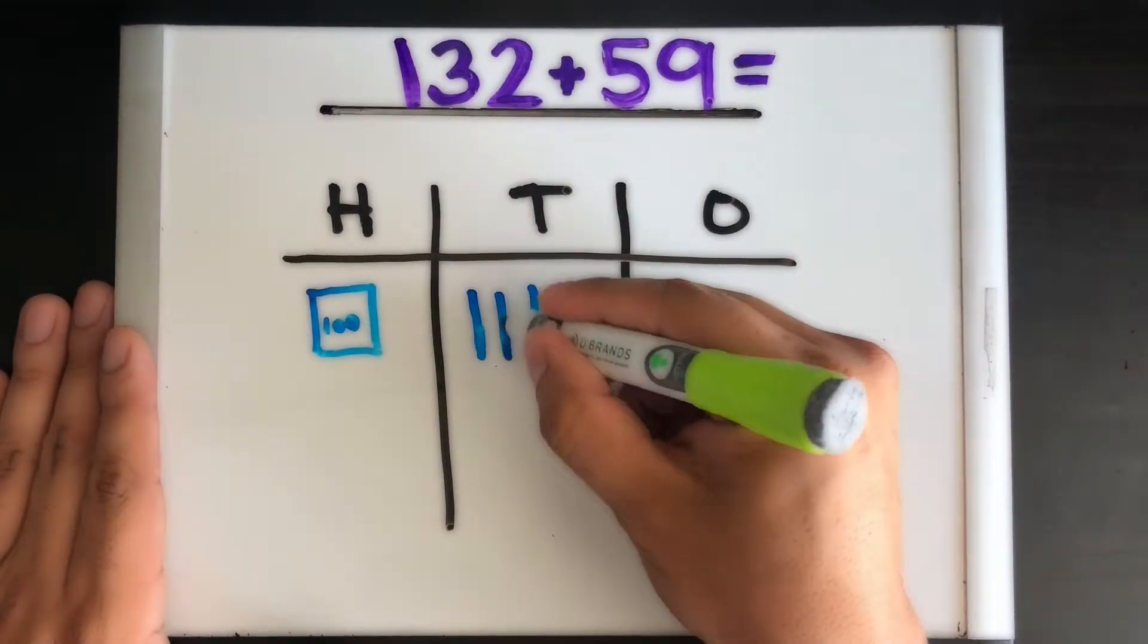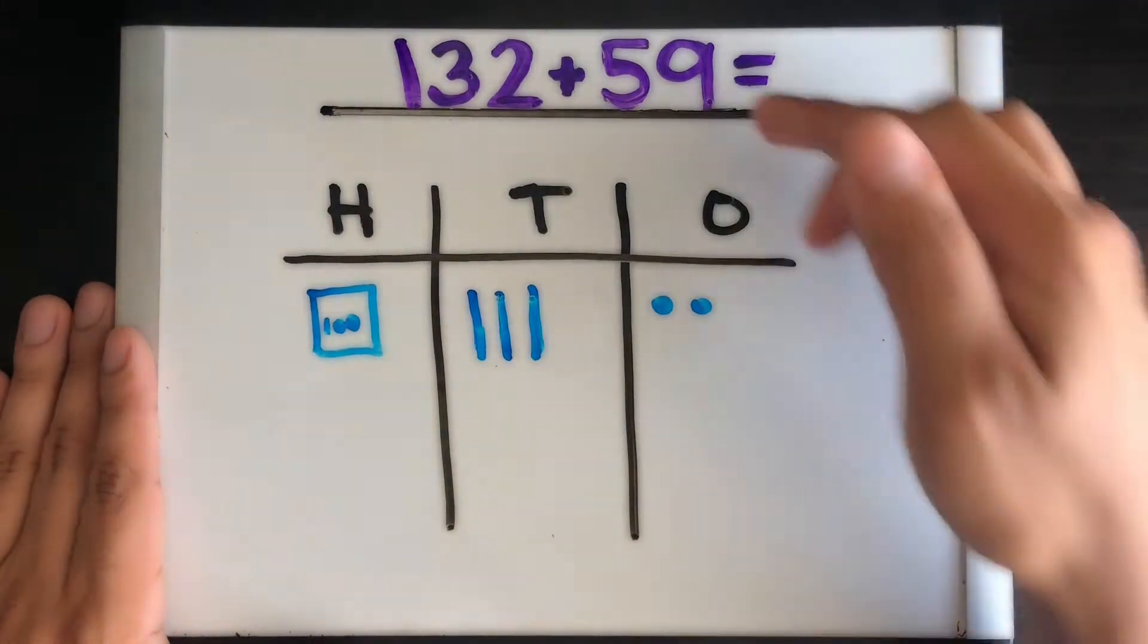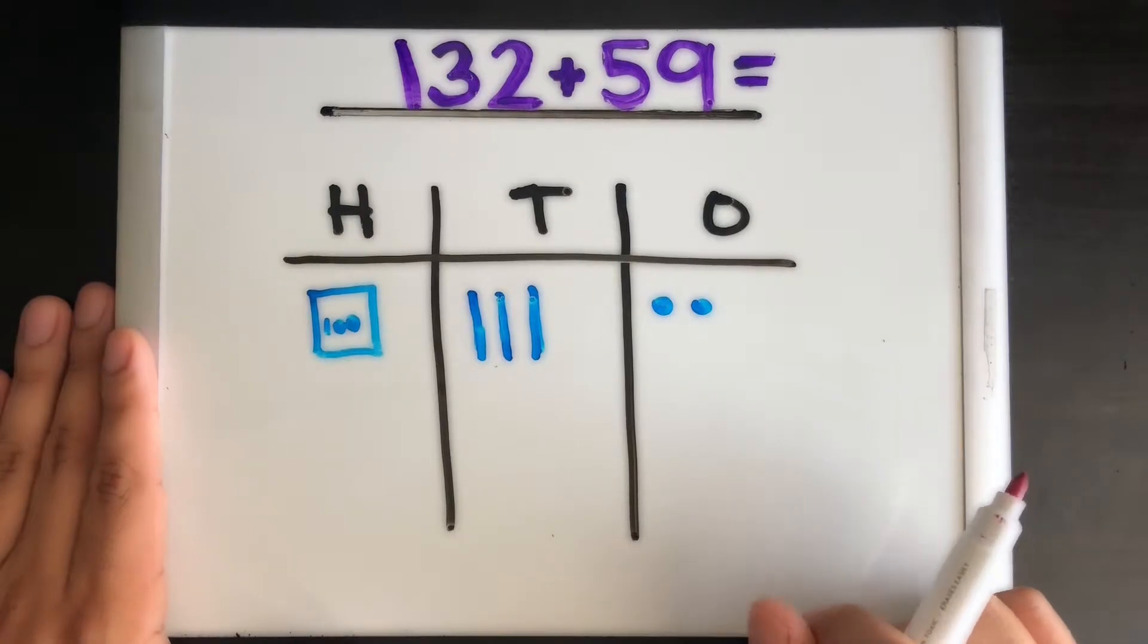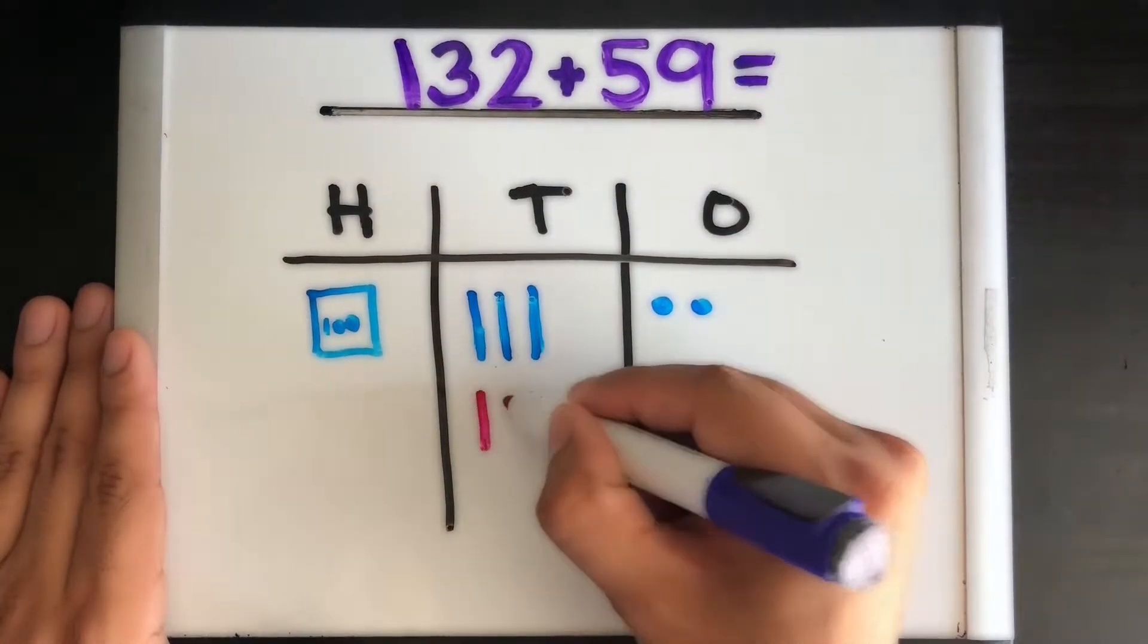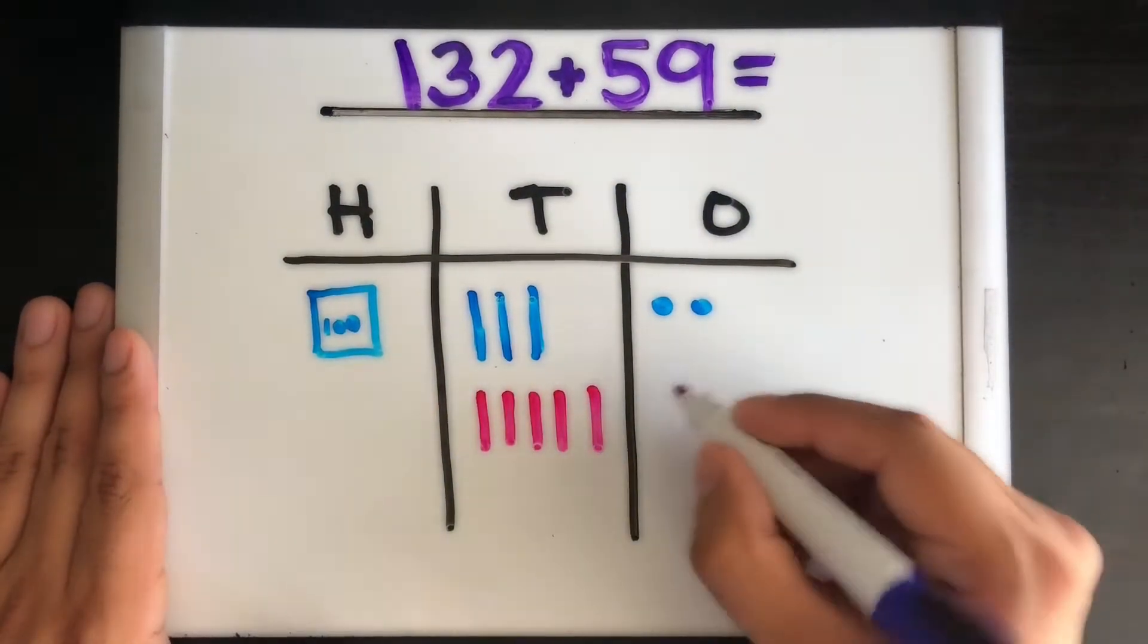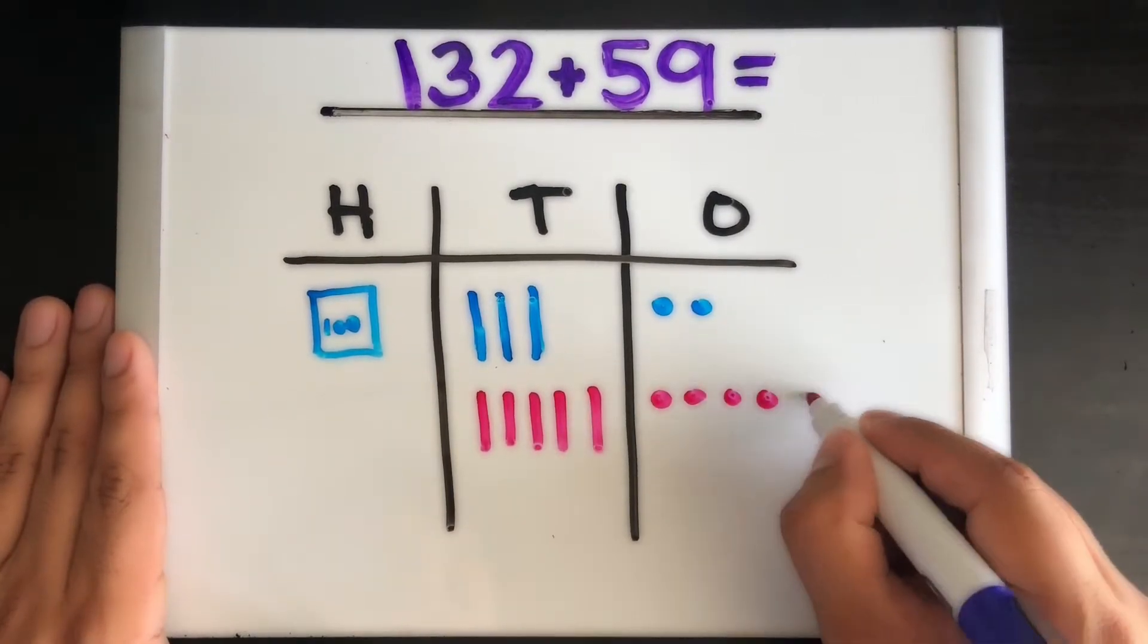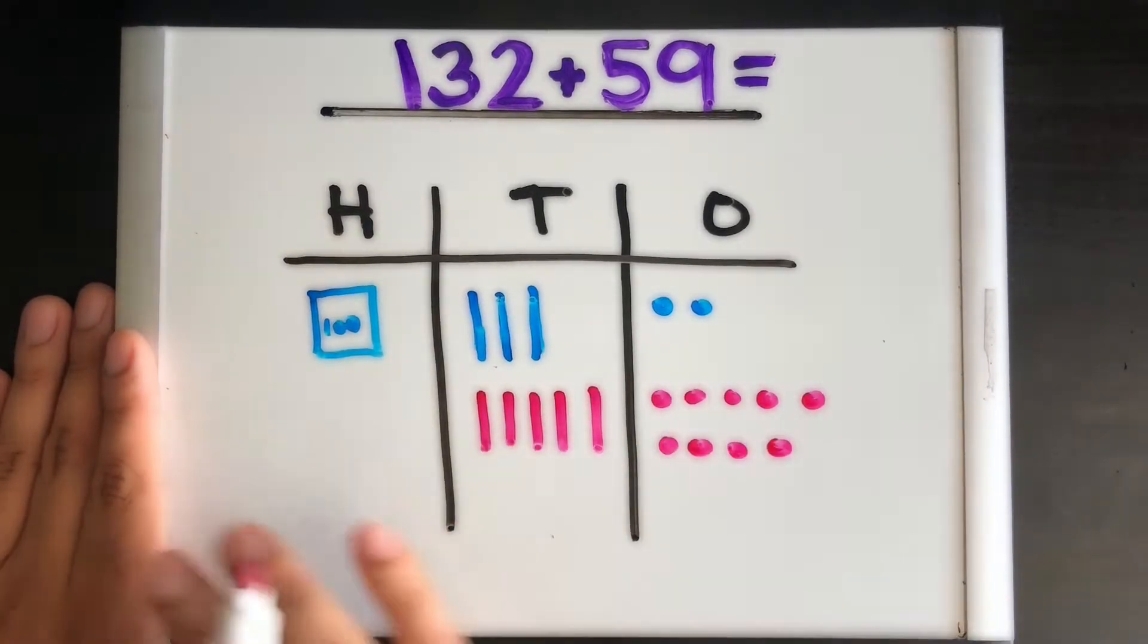Now let's build our second number, 59. Okay, so we have five tens, so let's draw those out: 10, 20, 30, 40, 50—five tens. And we have nine ones, so let's draw those out: one, two, three, four, five, six, seven, eight, nine.